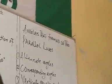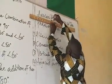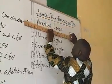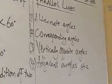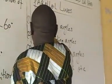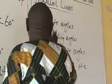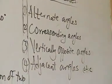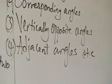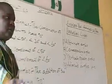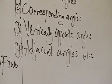Angles are formed on the parallel lines. The angles that form on the parallel lines: we have alternate angles, we have corresponding angles, we have vertically opposite angles, and we have adjacent angles.